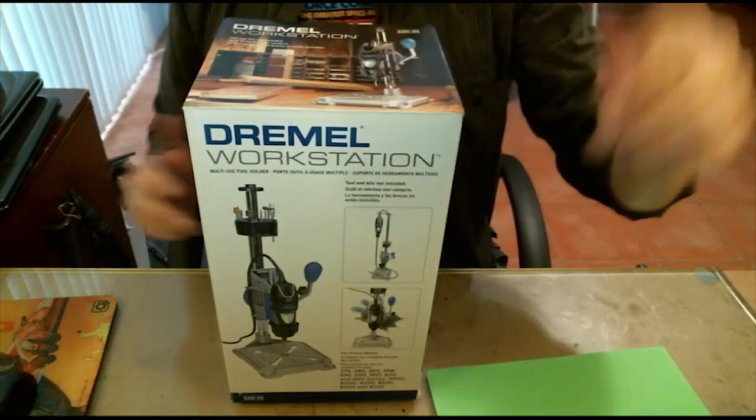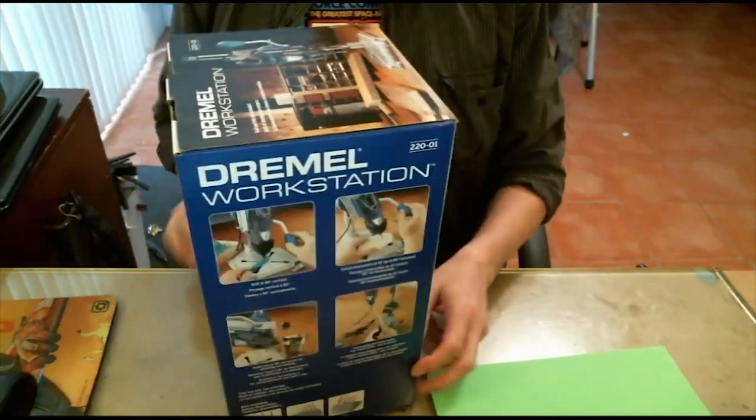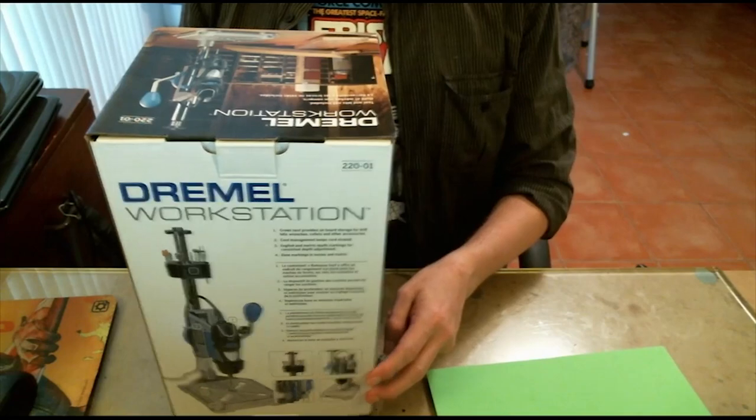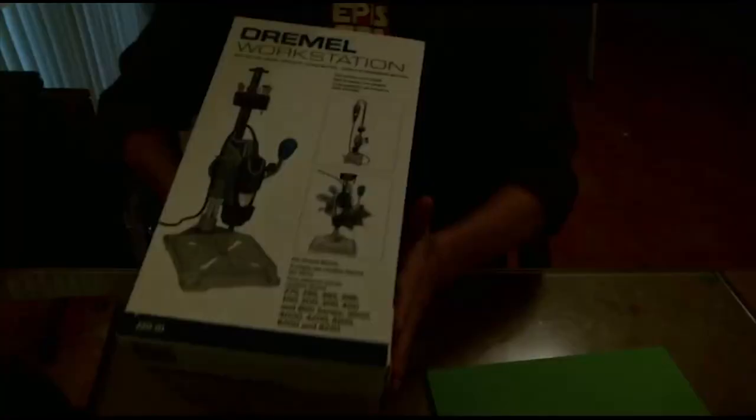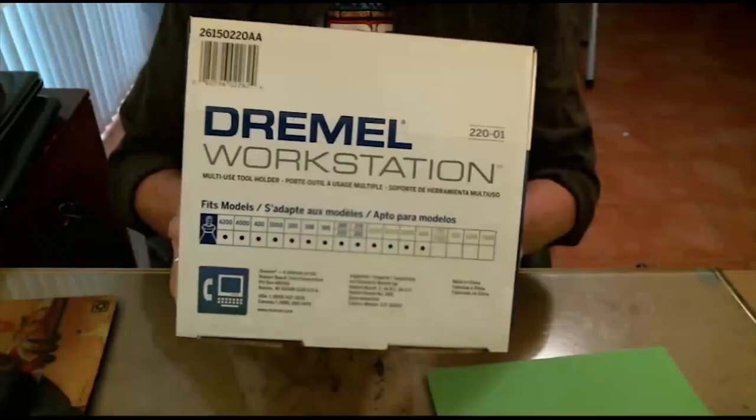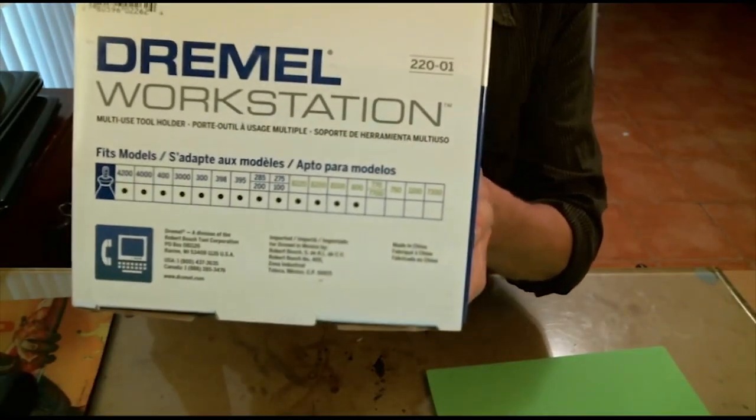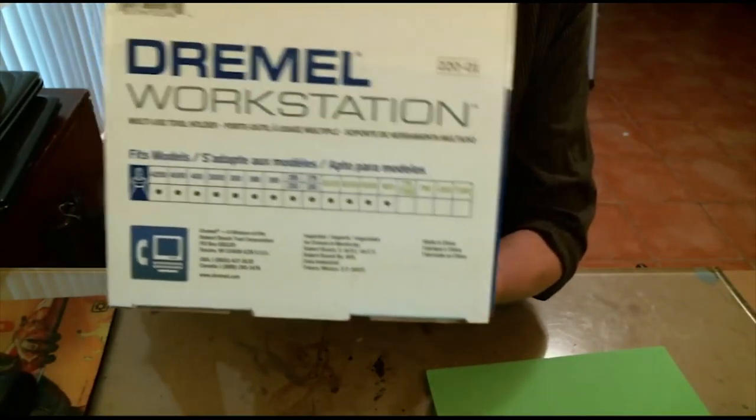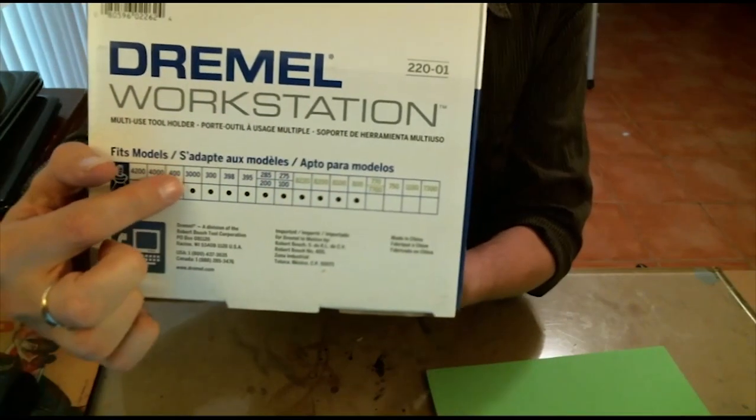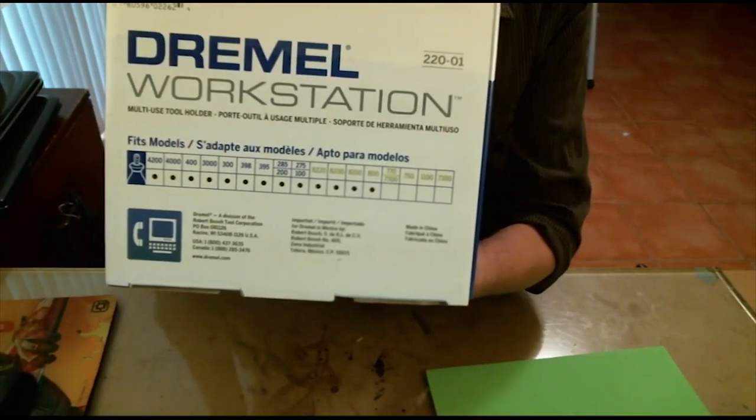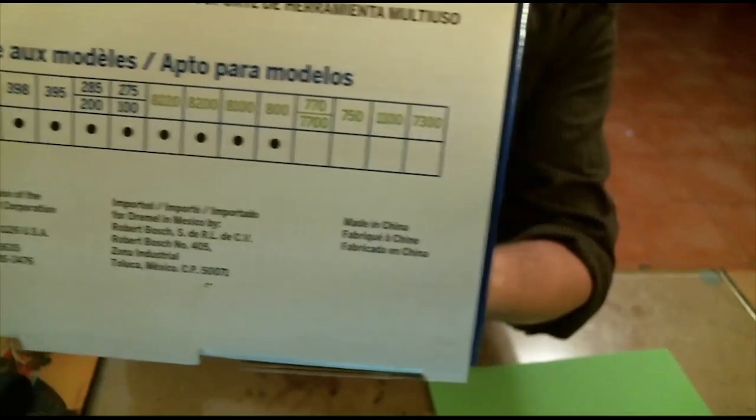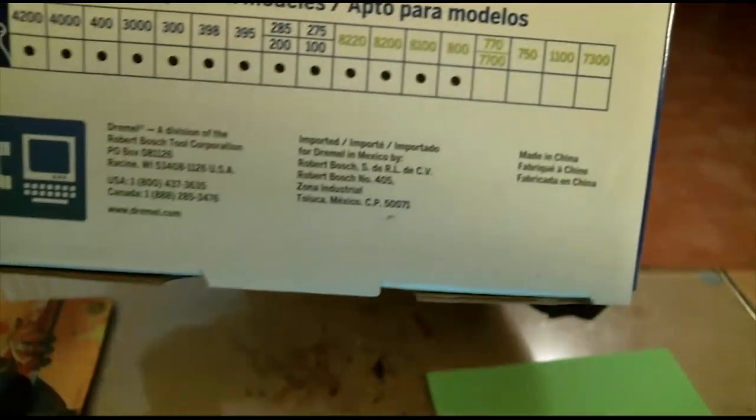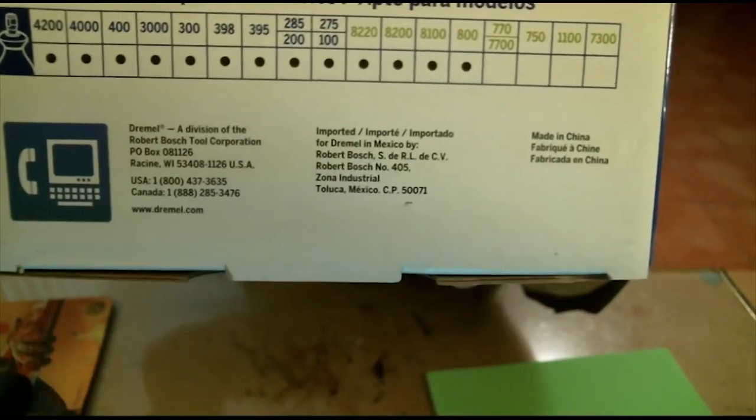It is the Dremel workstation drill press combo. On the bottom, you can see all the units that it is compatible with. I'm running a 3000 Dremel, so I'll be fine. And I found out recently, Dremel, a division of the Robert Bosch Company. Dremel, ladies and gentlemen, are part of Bosch. And Bosch makes some kick-ass toys.